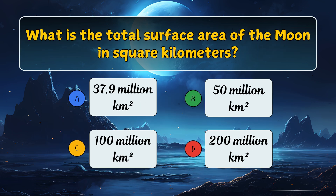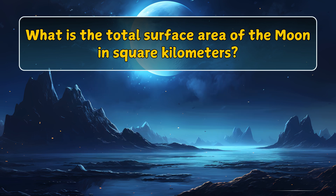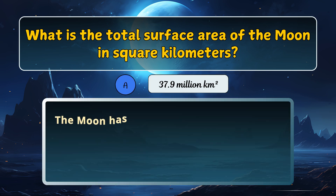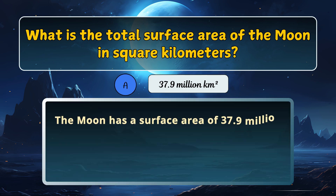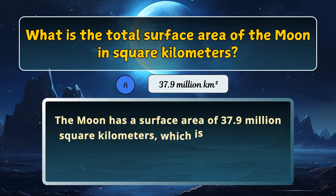What is the total surface area of the moon in square kilometers? Here is the answer: 37.9 million square kilometers.